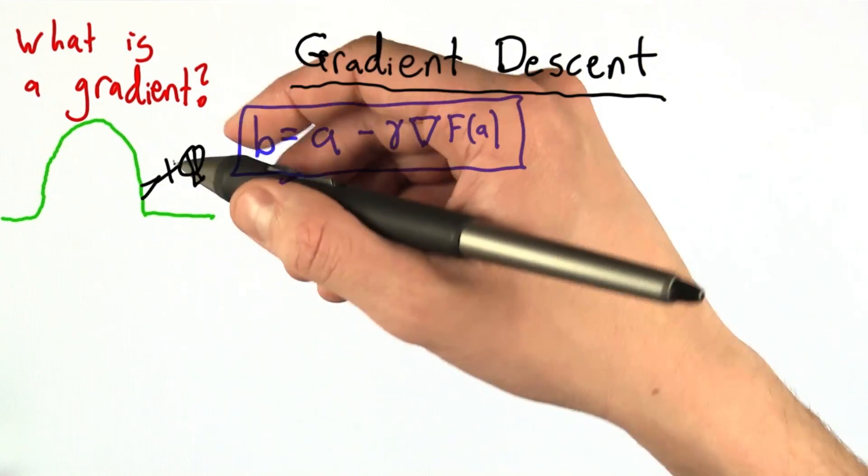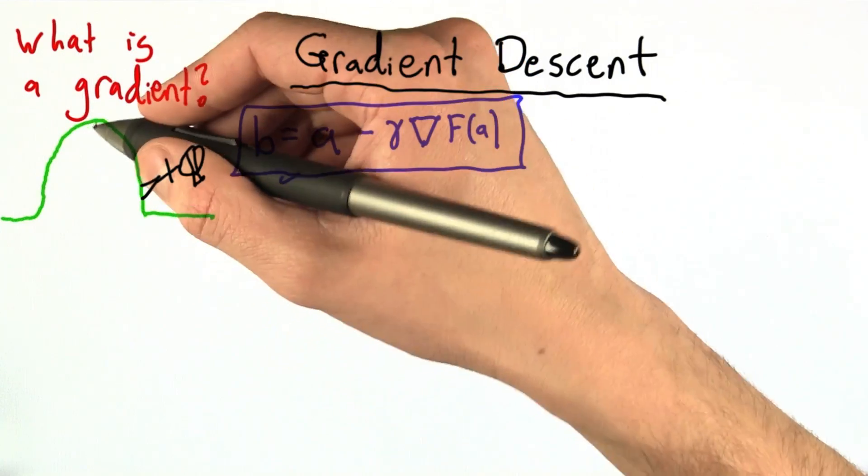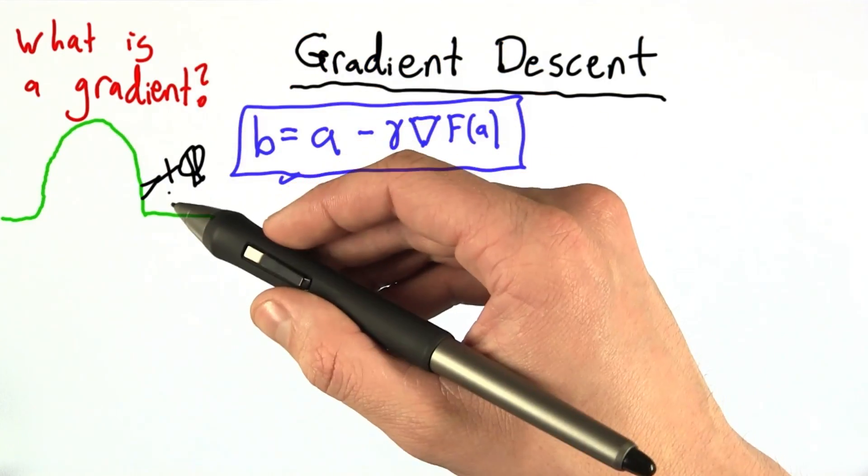So here's our blindfolded hill climber, and he's climbing this rounded hill. He wants to get to the top, and he wants to do it in as few steps as possible. What is his method going to be?